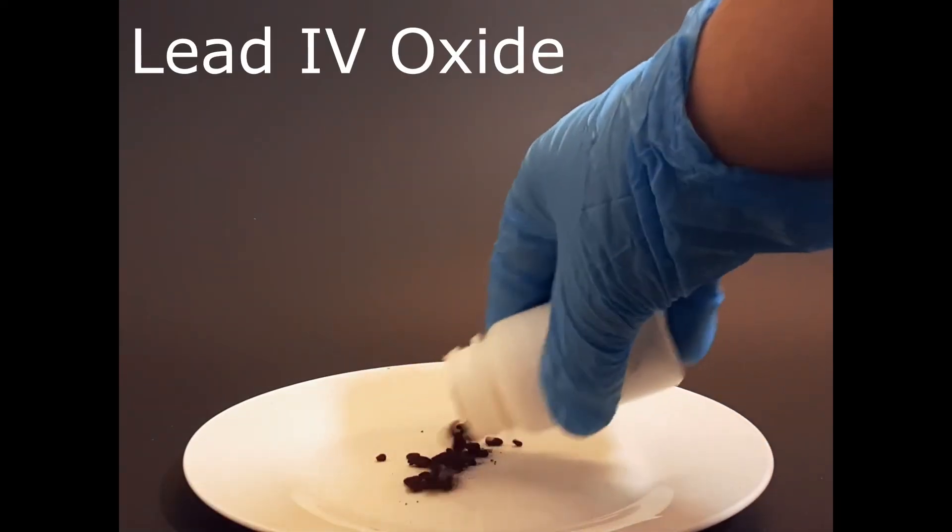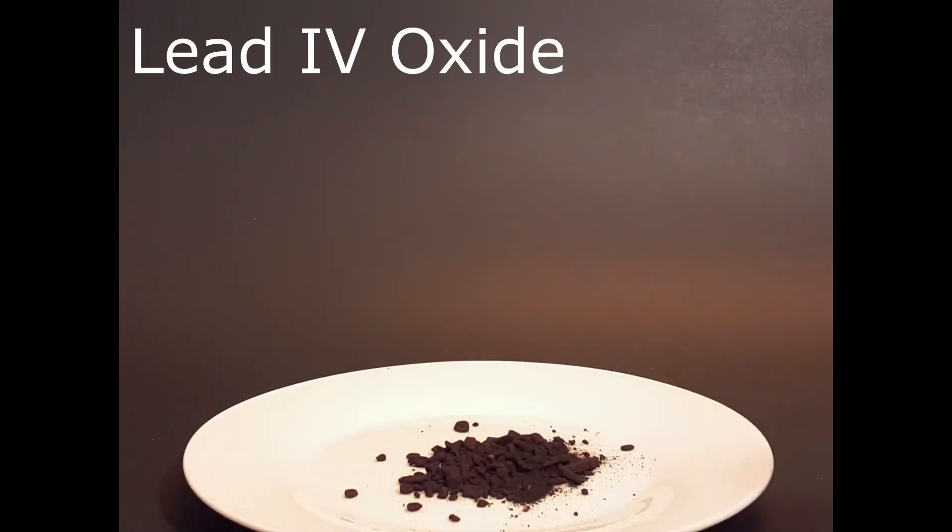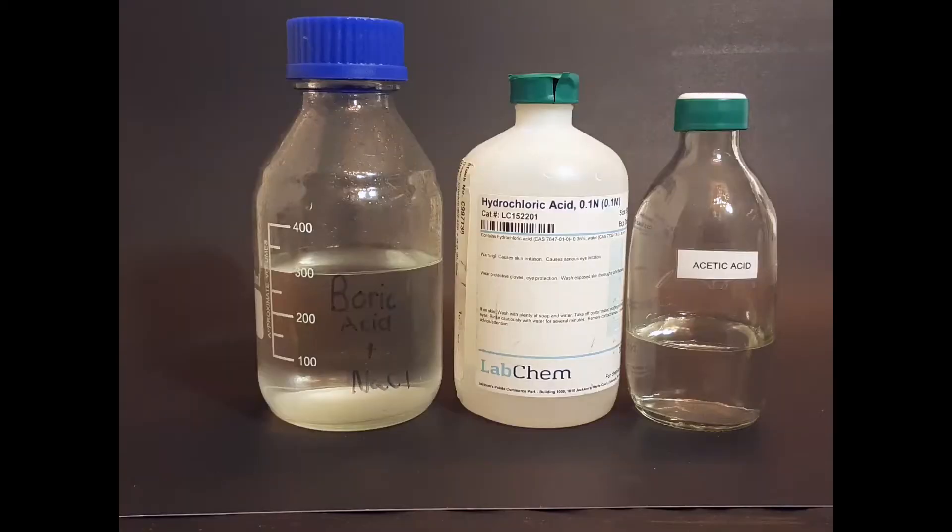Other chemicals are even more dangerous. Things like lead compounds like lead oxide and lead sulfate are extremely poisonous, not only toxic because they release toxic fumes, but if you were to ingest even a small amount of it, it would be very bad.